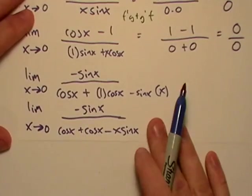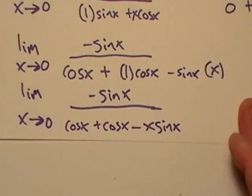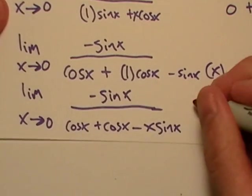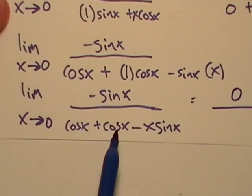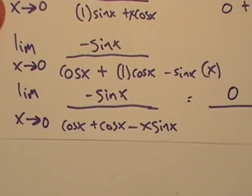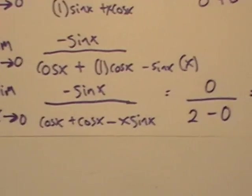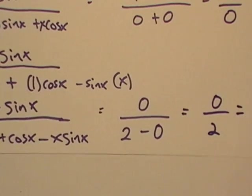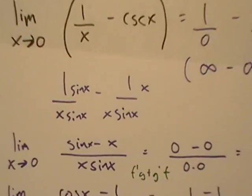Okay, so that's where we get, we simplify it and we go into there. Actually, let me zoom in a little more. Okay, so what if I take the limit here, what do I get? I get zero over cosine of zero plus cosine of zero, that's one plus one is two minus zero. This one's okay, because that's just zero over two, which is zero. Okay, so the limit on this one is zero.